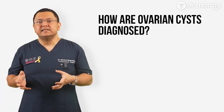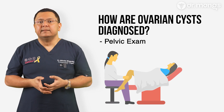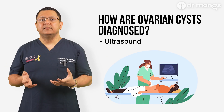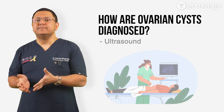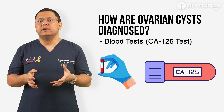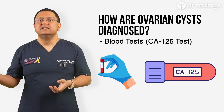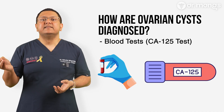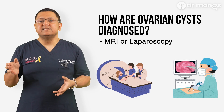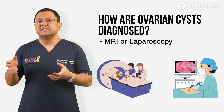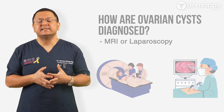If you have symptoms of an ovarian cyst, your doctor may recommend a pelvic exam to check for lumps or tenderness, an ultrasound as the primary tool for identifying the size, shape, and type of cyst, blood tests such as CA125 or other tumour markers mainly if there is concern about malignancy, and MRI or laparoscopy if the cyst appears complex or if endometriosis is suspected, proceeding with excision of the disease at the same time.